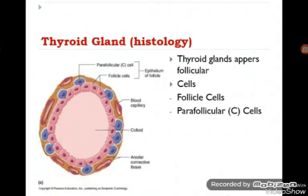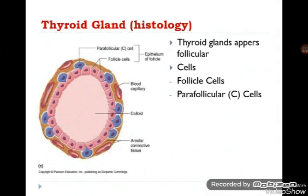Regarding the histology of this gland, its histological appearance resembles its gross anatomy. If you examine this gland grossly, you find it lobulated or folliculated. And if you examine the cross section under the light microscope, you will find millions of follicles. These follicles are surrounded by two types of cells: the follicle cells and the parafollicular or C cells.